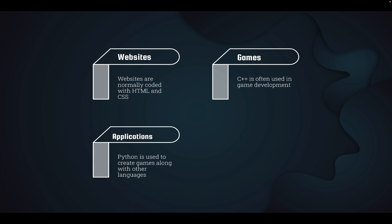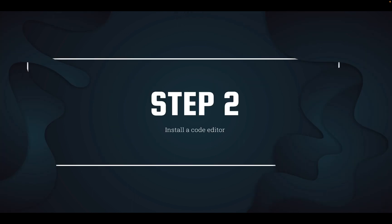Typically websites are coded with HTML and CSS, while games use other languages as well. If you want to code an application, there are languages like Python and many others. In this tutorial specifically, we are going to be using HTML for websites.